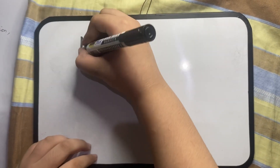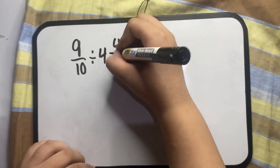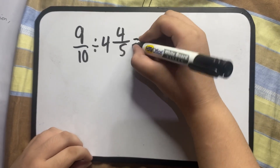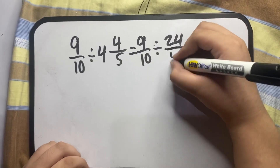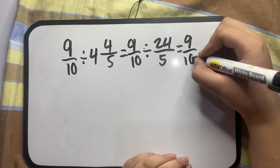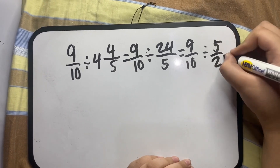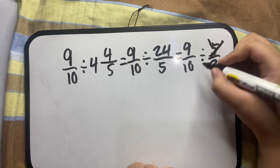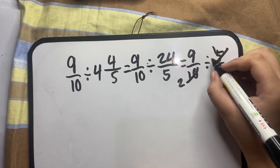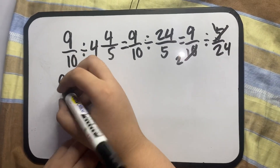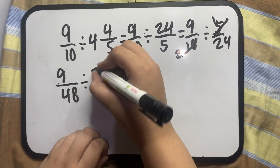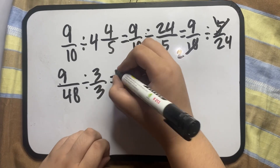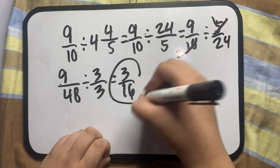You can also use the cancellation method. Let's solve 9 over 10 divided by 4 and 4/5. First, turn the mixed number into an improper fraction. Then get the reciprocal of the second fraction. Apply cancellation: 5 divided by 5 equals 1, and 5 divided by 10 equals 2. Then multiply the remaining values and simplify if possible to get the final answer.